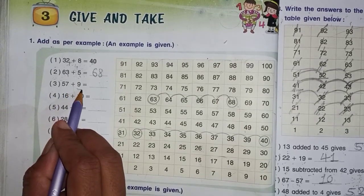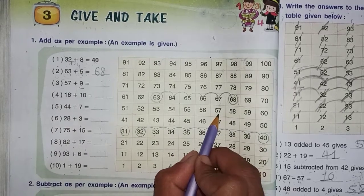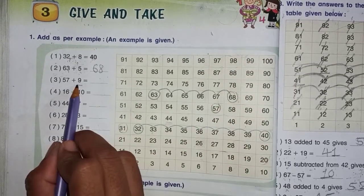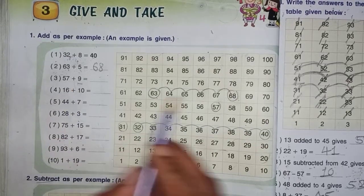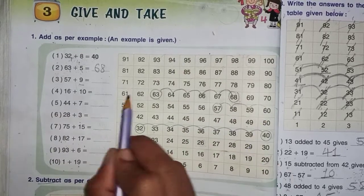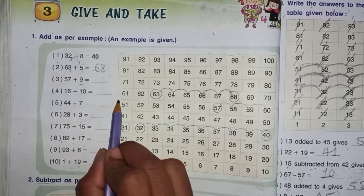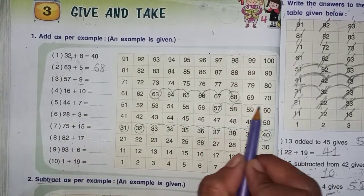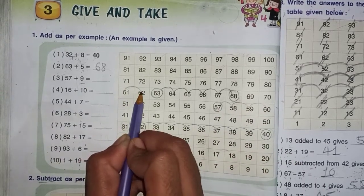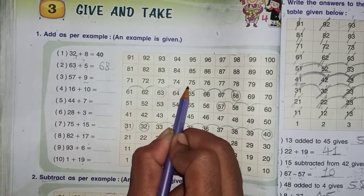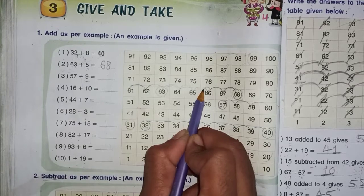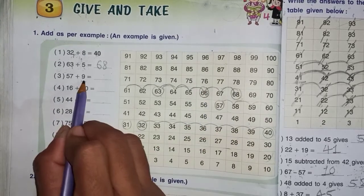Third number, 57 plus 9. So 57 is where it is. Here we have to round and we have to do it, counting 9 numbers. Count 1, 2, 3, 4, 5, 6, 7, 8, 9. So 66 is the answer.